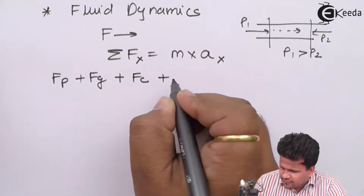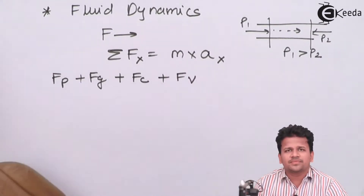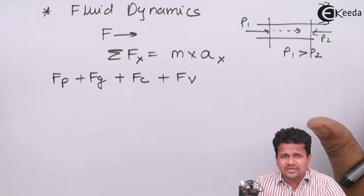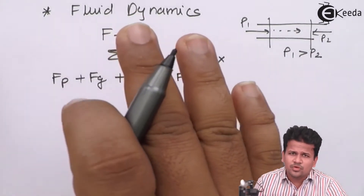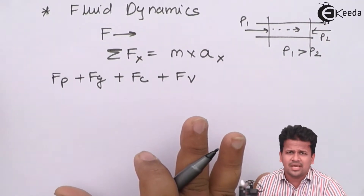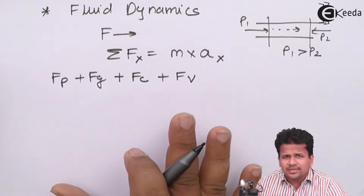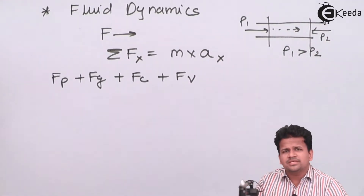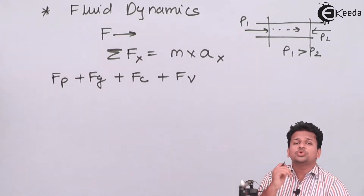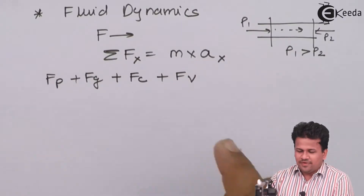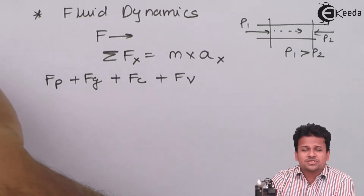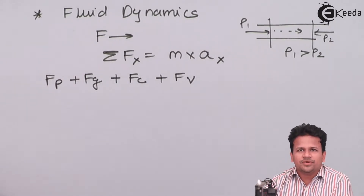Next is the force due to viscosity, that is the viscous force. When the fluid is flowing in a particular direction, the topmost layer flows with the greatest velocity while the bottommost layer is almost stationary. So there is a velocity gradient between the bottommost layer and the topmost layer. FV is the force due to the viscosity of the fluid — the viscous force offered by the fluid.